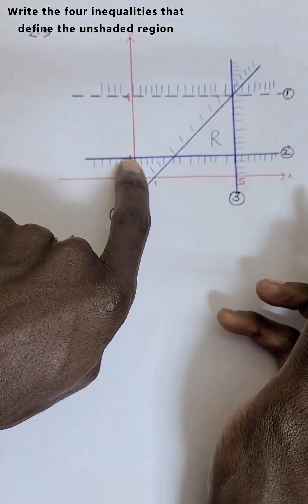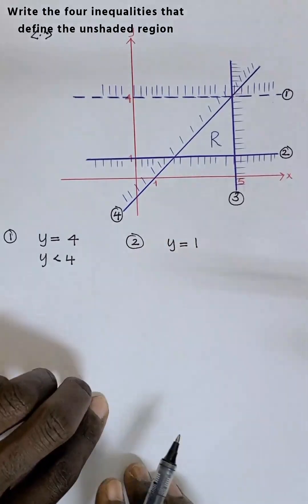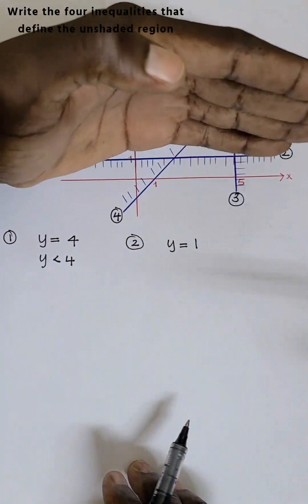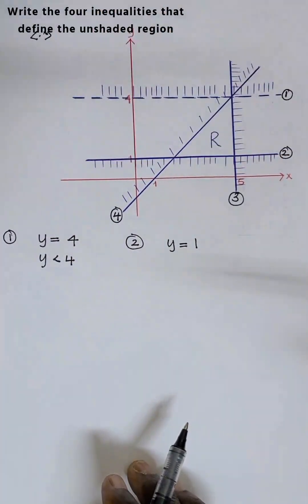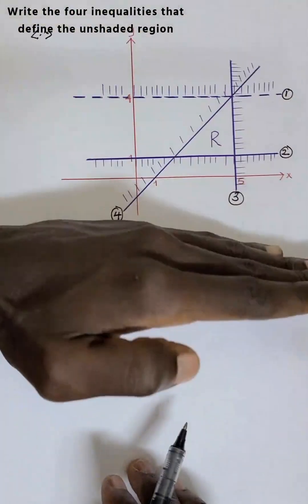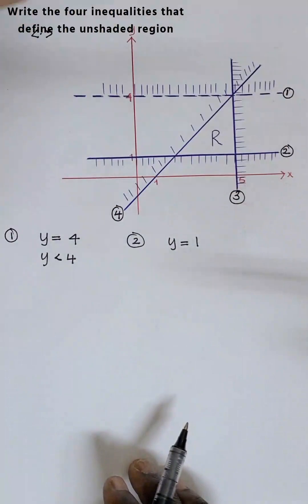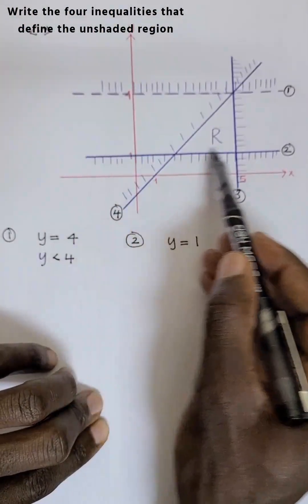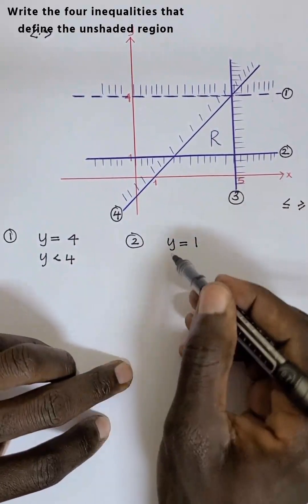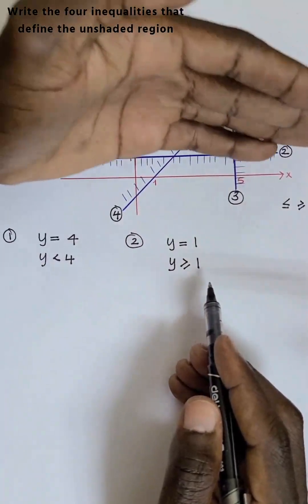Line two is passing on point zero comma one, where y equals one. Now we know y equals one. We are looking for the part that has been unshaded — the upper part has not been shaded, the down part has been shaded. We are looking for the upper part, which is greater than or equal to one. Because the line is not dotted, we use greater than or equal to. So y is greater than or equal to one.